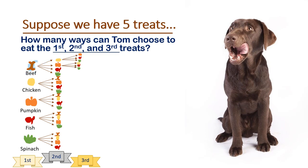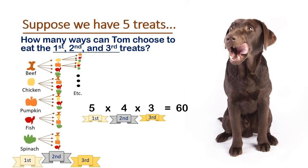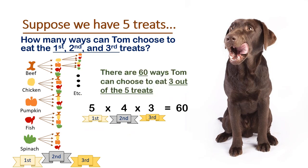Similarly, if he had the beef treat first, then the pumpkin, his only choices left would be the chicken, fish, or spinach. I'm not going to finish drawing all these little branches because it would take forever. Though, notice that the five treats that we started with each branched four times. And now the second treats will each branch three times. And five times four times three equals 60. So we can conclude that there are 60 ways Tom could have made those three treat choices.